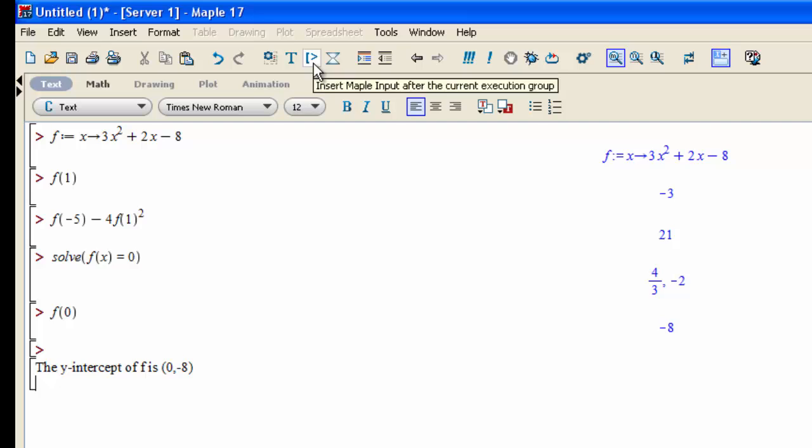If I want to start entering commands again, I switch back to command prompt mode by clicking this bracket greater than symbol in the menu at the top. That puts me back in execution mode. What else can we do?